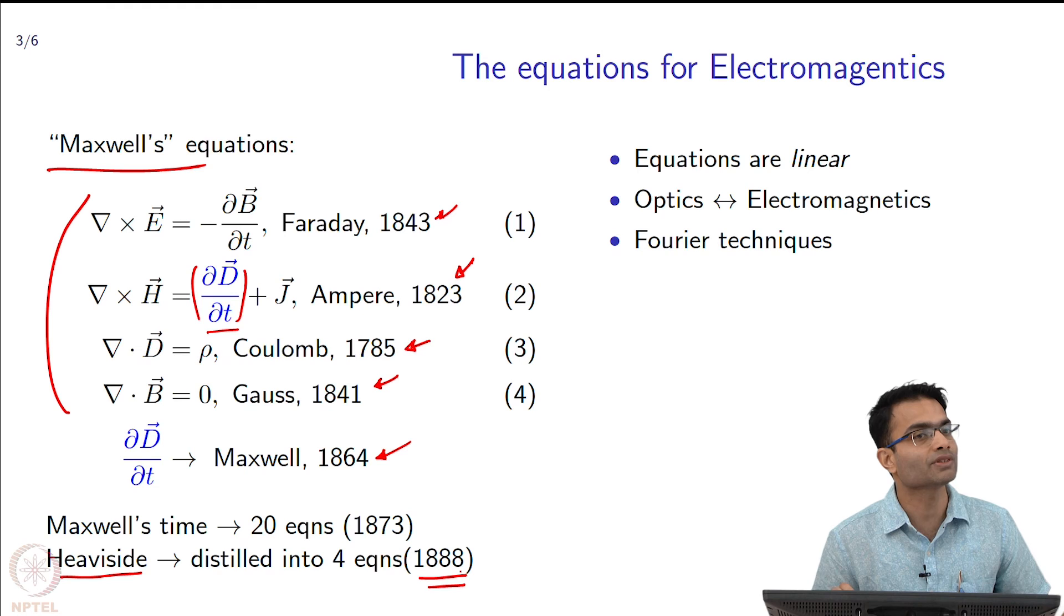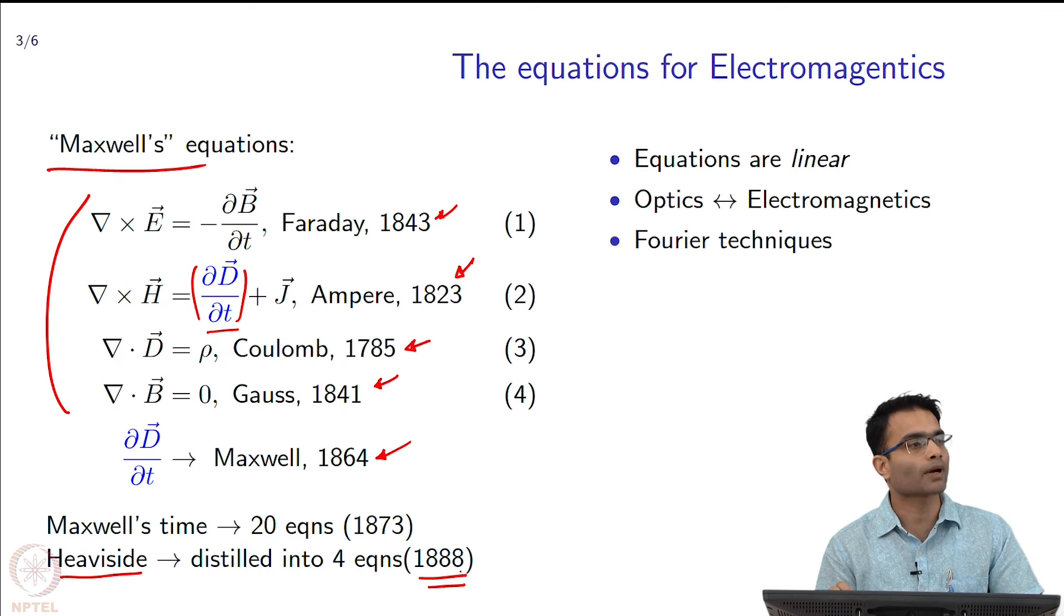Then there was this scientist by the name of Heaviside who condensed these 20 equations finally into 4 equations which is what we have been studying since 1888. Why have these equations been so successful? Anyone wants to take a guess? It explains light. It survived one major test - what happened in the early part of 1900s? Relativity.